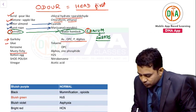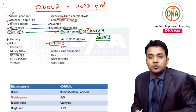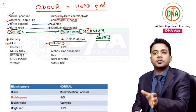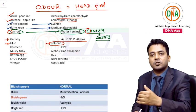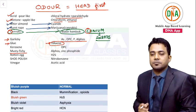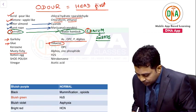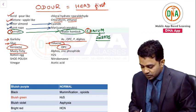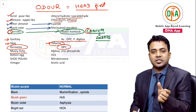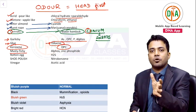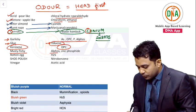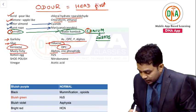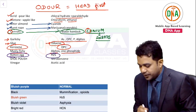Glue-like smell is due to toluene. Toluene is used as a urine preservative — preferred over thymol for preservation of urine at autopsy. Kerosene-like smell is due to organophosphorus compounds. Musty fishy or rotten fish-like smell is due to aluminum phosphide and zinc phosphide. Rotten egg-like smell is due to hydrogen sulfide (H₂S).